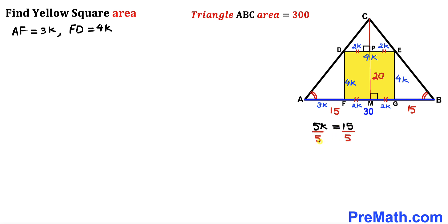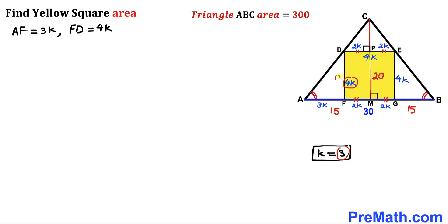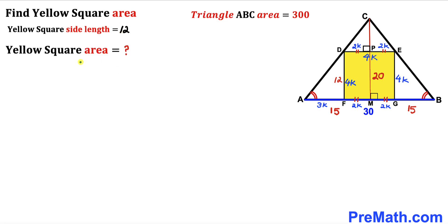Dividing both sides by 5, our constant K turns out to be 3. Therefore the side length of the square is 4 times K, which is 4 times 3, giving us 12. The side length of this yellow square turns out to be 12 units.